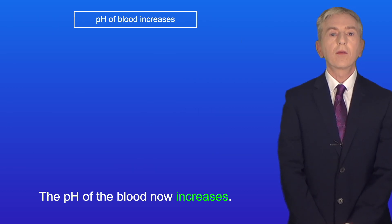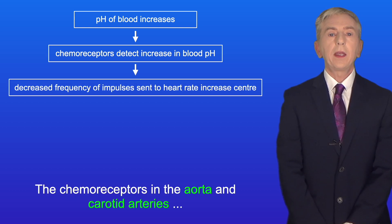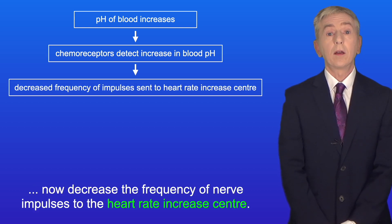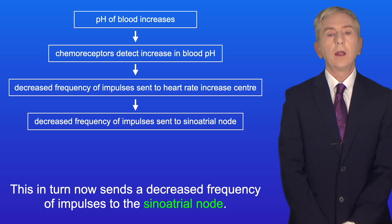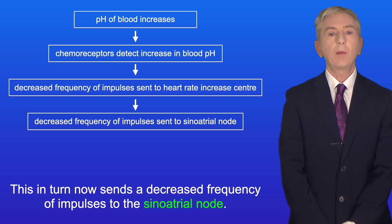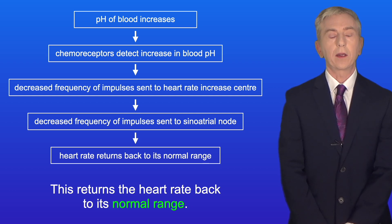The pH of the blood now increases, and this is detected by chemoreceptors. The chemoreceptors in the aorta and carotid arteries now decrease the frequency of nerve impulses to the heart rate increase center. This in turn sends a decreased frequency of impulses to the sinoatrial node, and this returns the heart rate back to its normal range.